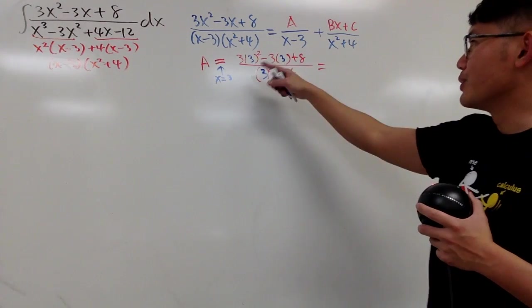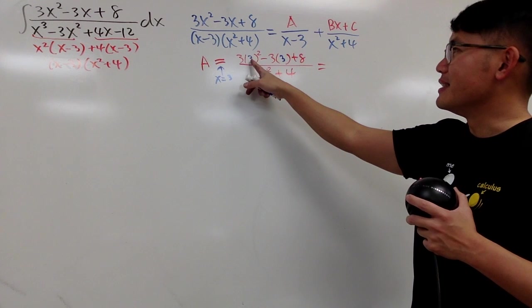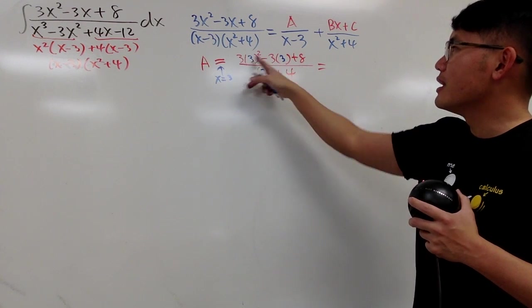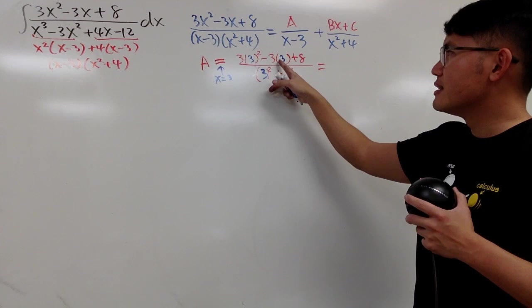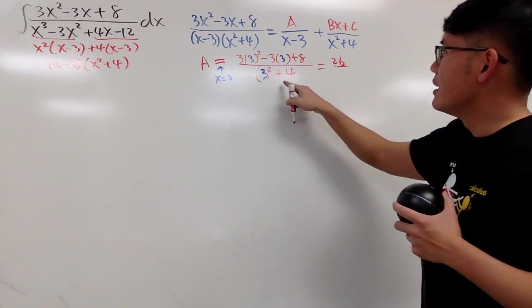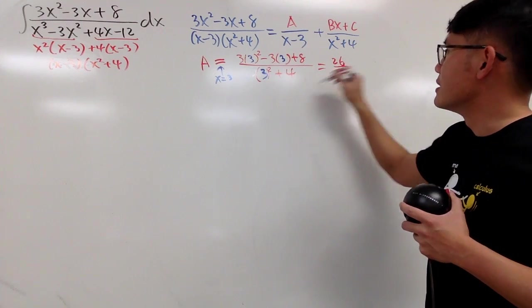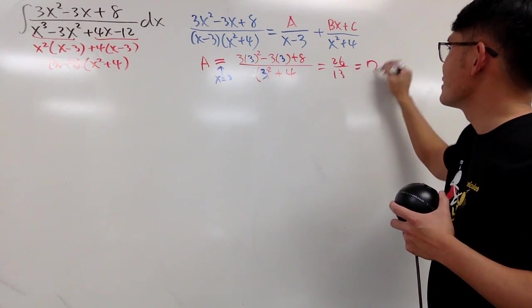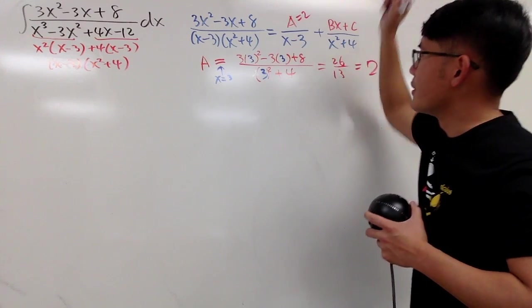Alright, now let's see if we can do this or not in our head. Let's see, this is 9 times that is 27. 27 minus 9 is 18, plus 8 is 26. Over, this right here is 9 plus 3 is 13. So, hey, this is just nice number 2. So that's good. You have 2 right here.